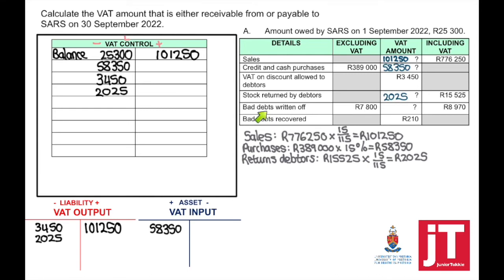Bad debts written off? This is an easy calculation because we just take the amount including VAT minus the amount excluding VAT, and that equals the VAT amount. Bad debts written off means we can get a reduction in the amount we owe SARS. VAT output will be debited, our liabilities will decrease, and the VAT control account will be debited.